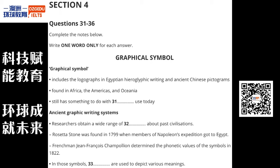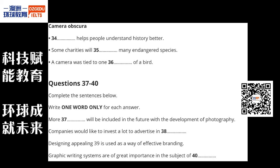He was able to correctly determine the phonetic values of the symbols, and later research has confirmed his findings. In many of these symbols, lines are used to portray a multitude of meanings, and knowledge and understanding of these lines holds the key to comprehension of graphic writing systems.